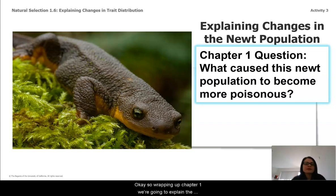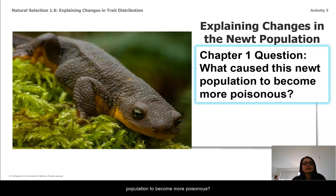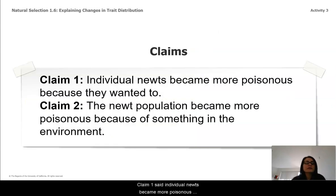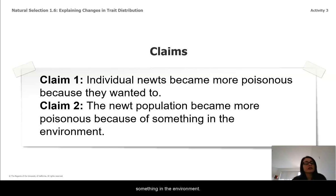Okay, so wrapping up chapter one, we're going to explain the changes in the new population. We're going to look at the chapter one question about what causes the newt population to become more poisonous. As a reminder of the claims: Claim one said individual newts became more poisonous because they wanted to. Claim two said the newt population became more poisonous because of something in the environment.